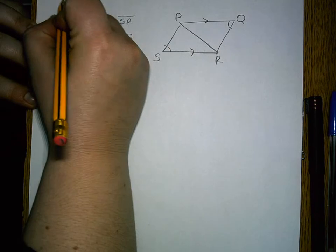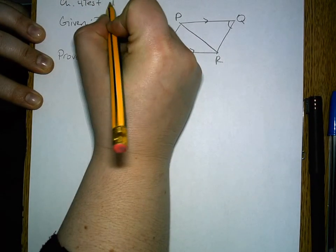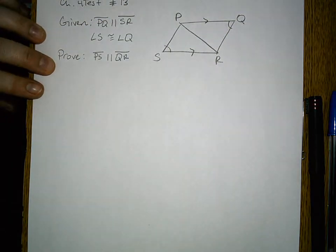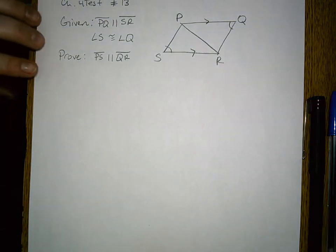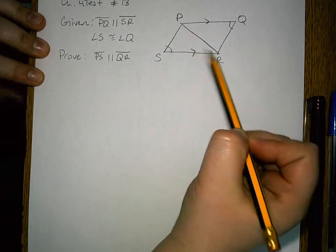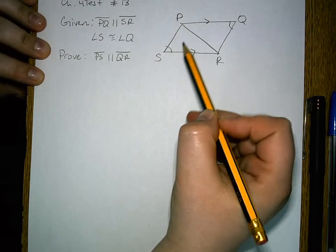This is chapter 4 test from the textbook number 13. For this problem, you have to do a proof that involves proving two triangles congruent before you can prove the lines parallel.